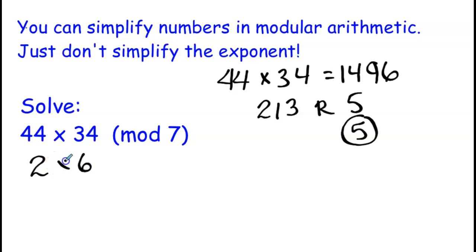So we can do 2 times 6, and 2 times 6 is 12, but 12 is not a number in mod 7. 12 itself has a remainder of 5 when you divide it by 7. So again, this is another way to see that this is congruent to 5.